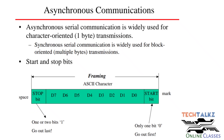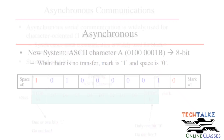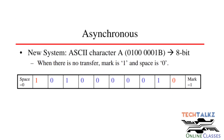The start bit can be a single bit, and the stop bit can be a single bit or 2 bits. According to the new system, an ASCII character is represented using 8 bits. Character A, for example, represents a corresponding binary value, and it will be sent in ASCII mode.